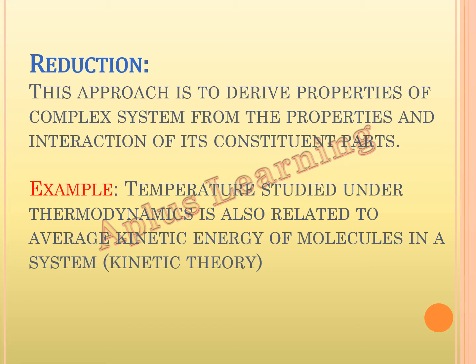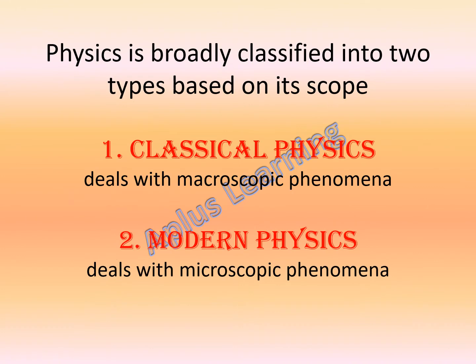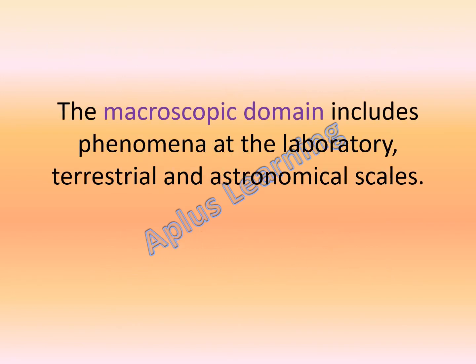Now let's see what is classical physics and modern physics. Physics is broadly classified into two types based on its scope: classical physics and modern physics. Classical physics deals with macroscopic phenomena, while modern physics deals with microscopic phenomena. The macroscopic domain includes phenomena at the laboratory, terrestrial, and astronomical scales.